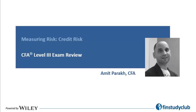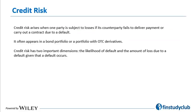We continue with our discussion on measuring risk. Here we will look at credit risk. Credit risk arises when one party is subject to losses if its counterparty fails to deliver the promised payment or fails to carry out a contract due to a default. So one would associate risk of default with credit risk.